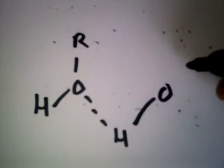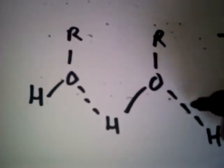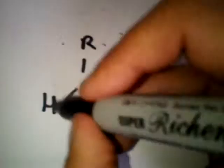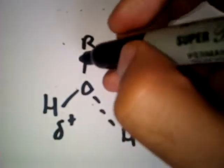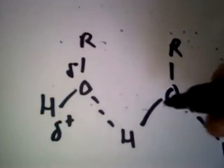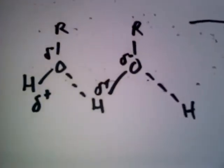Like this. And it's forming dipoles, so this side is slightly positive, this side is slightly negative, slightly positive, slightly negative. And that's how it works.